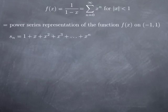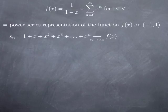Power series representations are useful in part because the function f of x is the sum of the series, which is really the limit as n goes to infinity of the sequence of partial sums. Here the sequence of partial sums S_n is just a polynomial of degree n, and as n goes to infinity this goes to f of x. In other words, you're approximating the function by a sequence of polynomials. And polynomials are very nice — computationally, they are very simple.